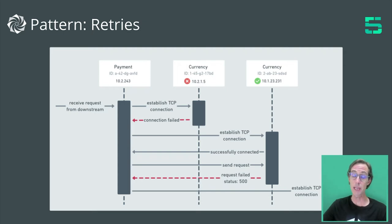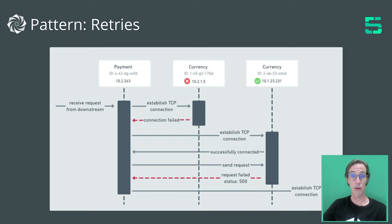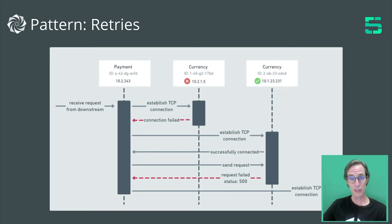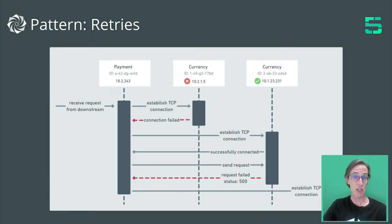The retry pattern understands the concept of the connection — can we connect to an upstream service? But it also understands what success looks like with regards to the layer 7 protocol you're using. For example, the payment service here is going to try and connect to the currency service. At layer 4, it will try to establish a TCP connection. If it can't, it will get a connection failure message and go into its retry loop, retrying another instance of the currency service. Once successfully connected, the retry analyzes the request — based on its criteria of success. For an HTTP request, the measure of success is HTTP status code 200.